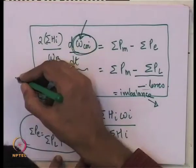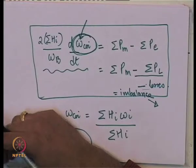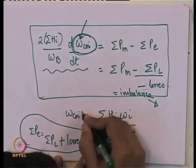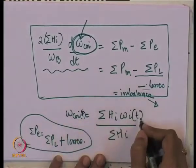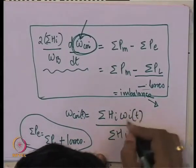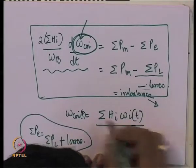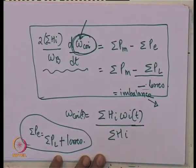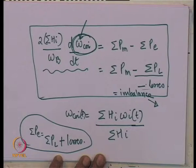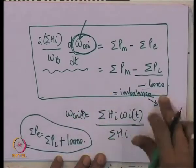The catch is that ω_COI is not a local signal — you must collect speeds of all generators, time-tag them, send them to a common point, compute the COI speed and estimate the load-generation imbalance, then choose a suitable chunk of load to trip. This is an interesting wide-area measurement scheme that is not currently implemented anywhere, but as engineers it is a conceptually feasible challenge using modern technology.